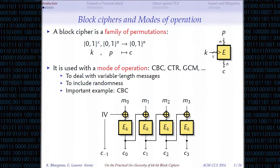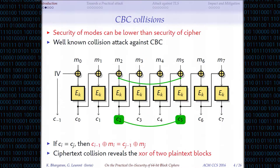CBC works as follows: you start from some initialization value which should be random, then you XOR this with your first message block and encrypt it — that's your first ciphertext block. Then you XOR the previous ciphertext block with the next message block, encrypt it, and that's how you get the next one. You iterate this construction. This construction is really used a lot in practice, and it has good security.